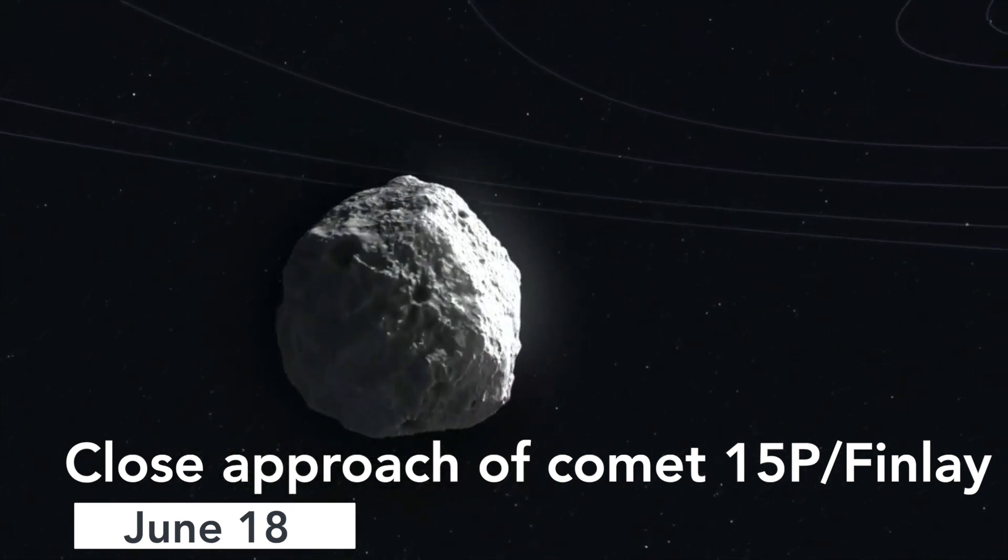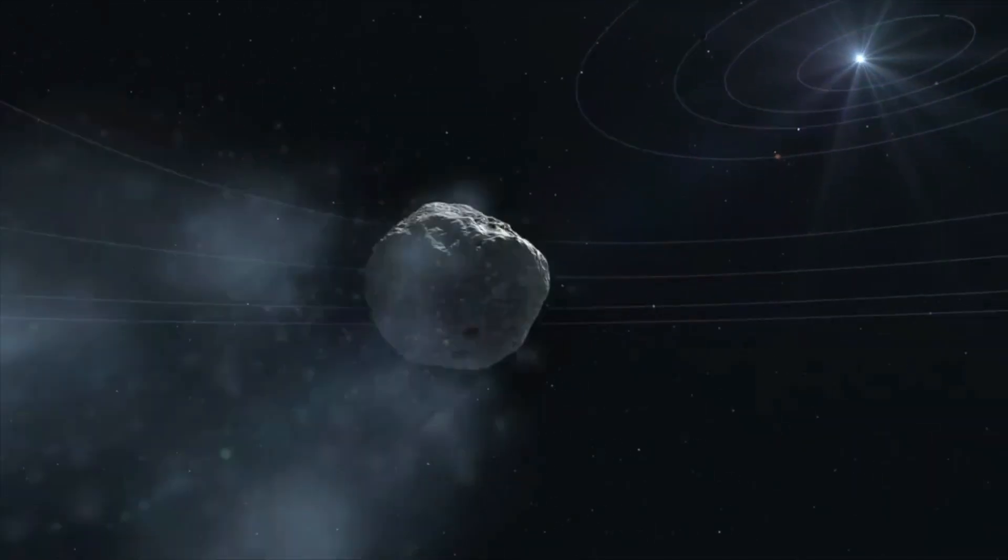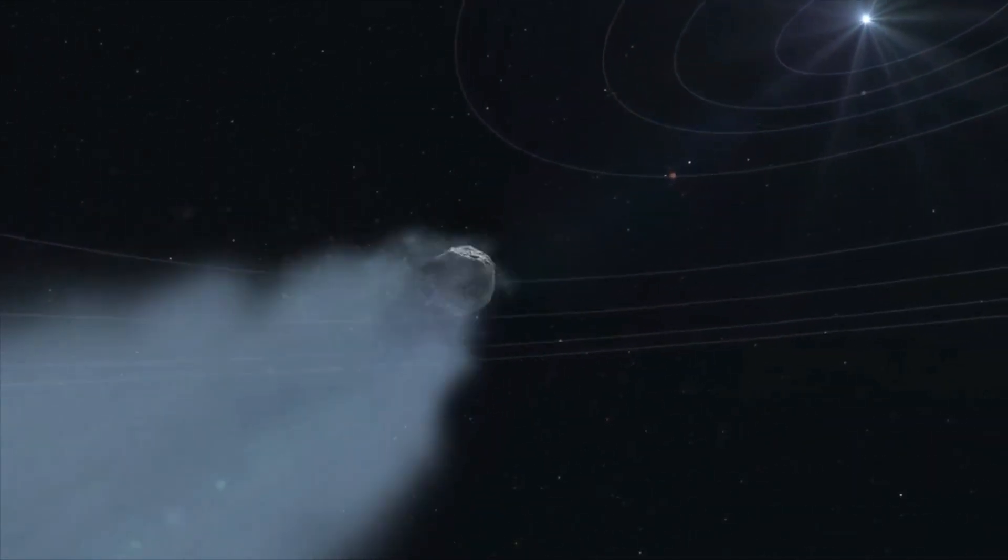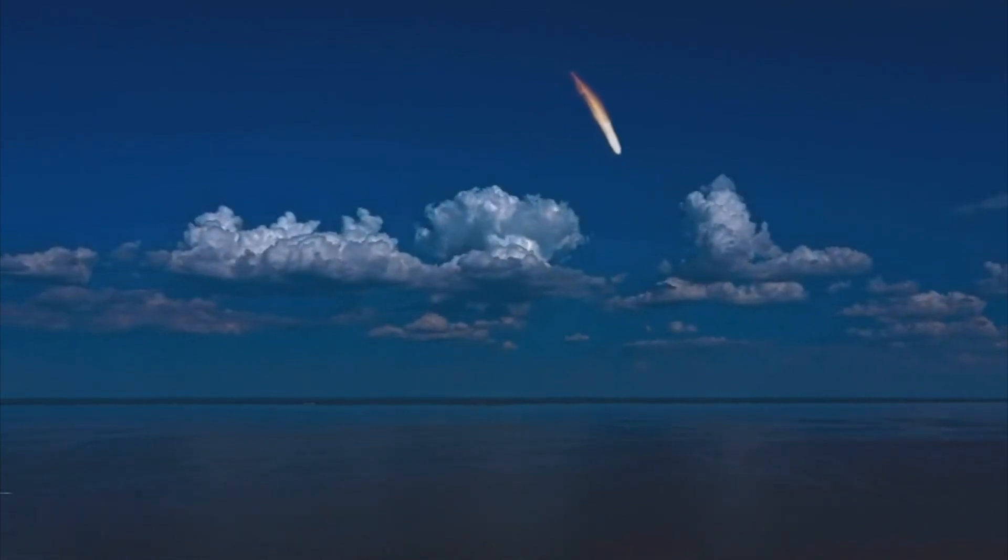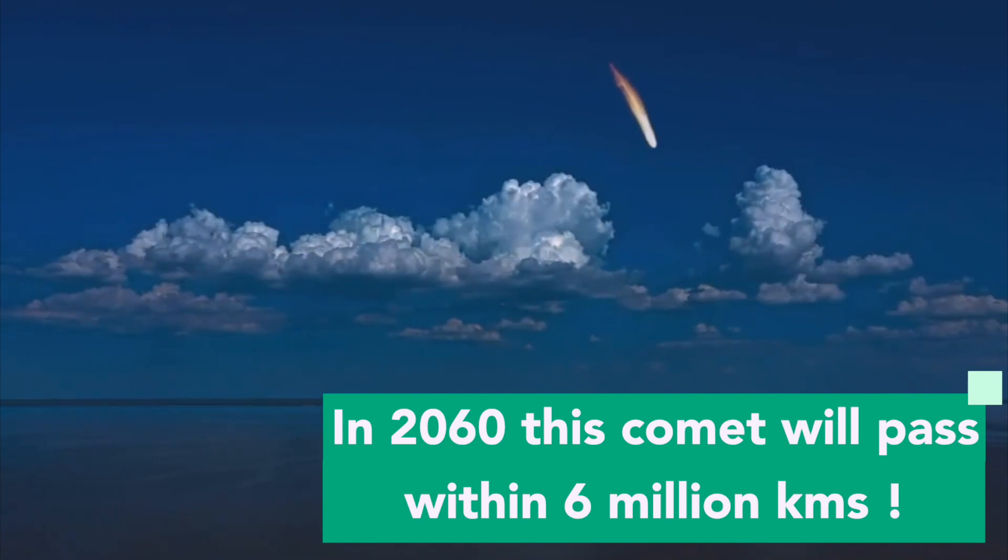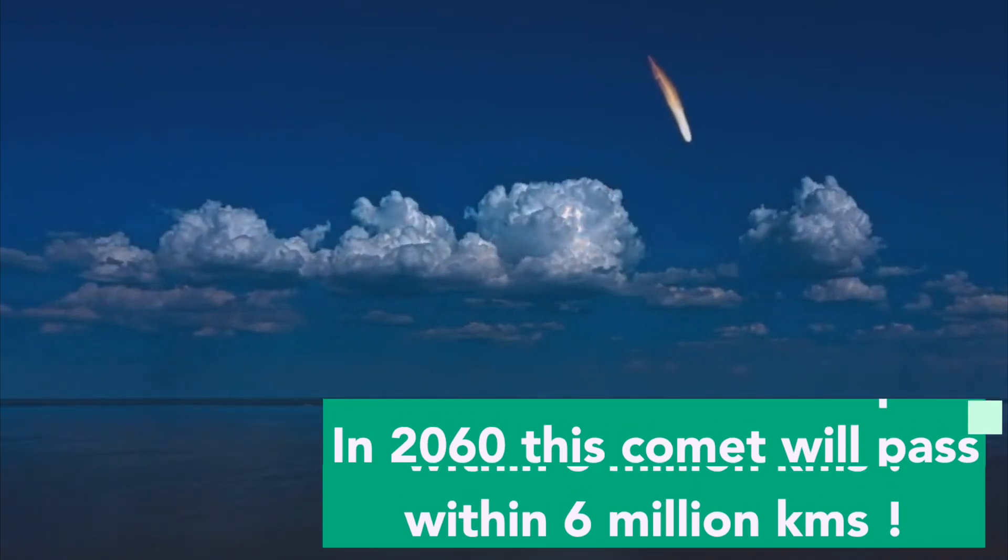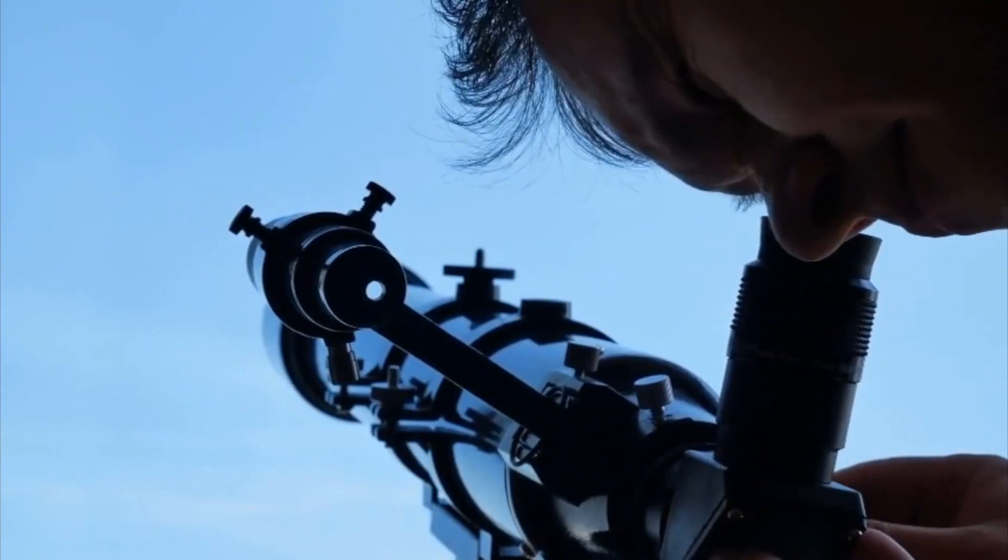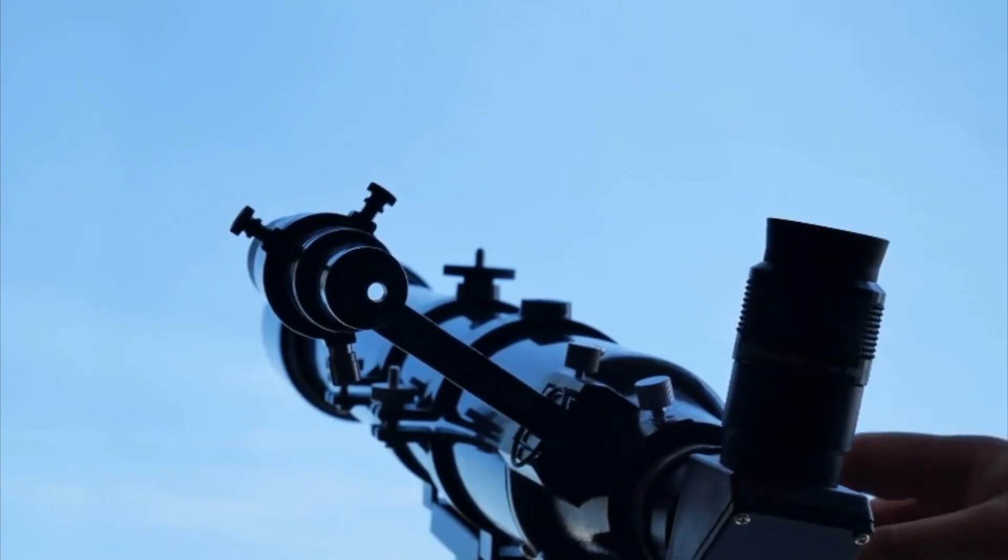15P, also called Comet Finlay, will make its closest approach to Earth at a safe distance of 1.10 astronomical units. The comet has an orbit period around the sun of about 6 years. In 2060, the comet will pass about 6 million kilometers from Earth, making it one of the closest comet approaches to Earth ever. This time the comet is however not visible through naked eyes, but with a pair of binoculars or a telescope.